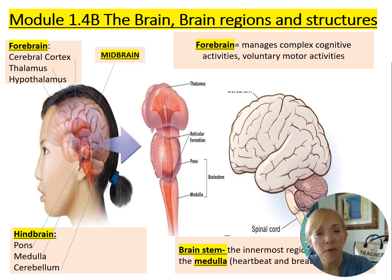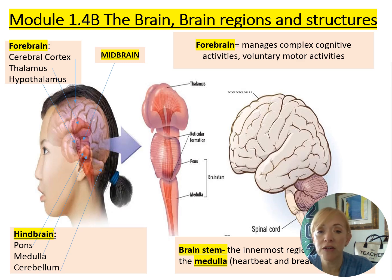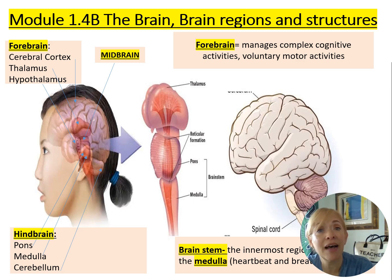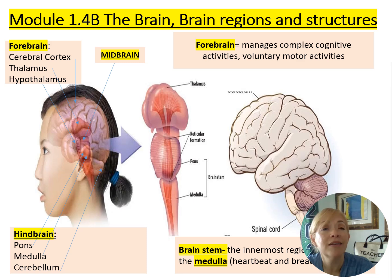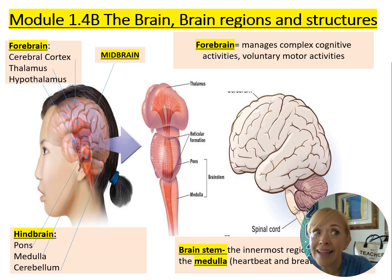You have to know your brain structures and functions — for example, the forebrain includes the cerebral cortex, thalamus, and hypothalamus, while the hindbrain includes the pons, medulla, and cerebellum. Know each individual structure and what it does.